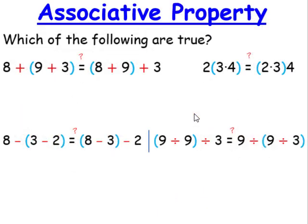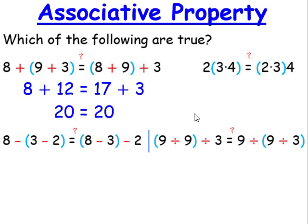Which of the following are true? When we take a look at this one, in the first one, we're going to add the 9 plus 3 first, and that leaves us with 8 plus 12. In the second one, we're going to add the 8 plus 9 first, and that gives us 17 plus 3. 8 plus 12 is 20, as well as 17 plus 3, so this is true.